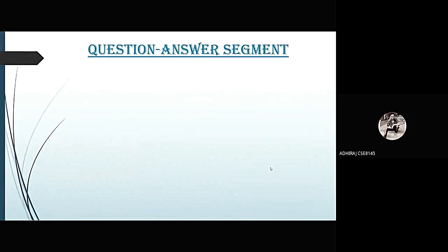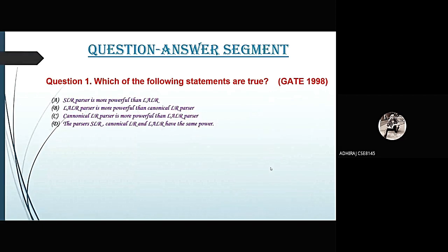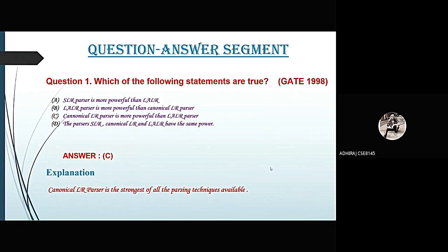Thank you, Oishi. Now, the first question: which of the following statements is true? Option A: SLR parser is more powerful than LALR. Option B: LALR parser is more powerful than Canonical LR parser. Option C: Canonical LR parser is more powerful than LALR parser. Option D: The parsers SLR, Canonical LR and LALR have the same power. This question came from GATE 1998. The correct option is C, because Canonical LR parser is the strongest of all parsing techniques available.